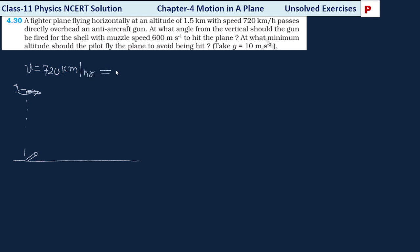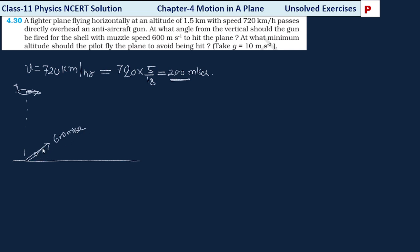What is the meaning of 720 km per hour? 720 multiplied by 5/18 equals 200 meter per second. So 720 km/h means the fighter plane is moving at 200 meter per second. And the muzzle speed — from here we fire a bullet at a speed of 600 meter per second.